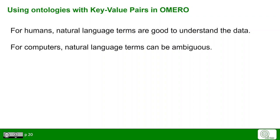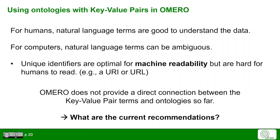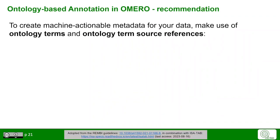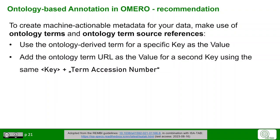In the next subchapter, we will focus on ontologies for key-value pairs. As a preview: for humans, natural language terms are easy to understand because we can grasp context, but for computers, natural language terms can be ambiguous — computers rely on unique identifiers to make data machine readable. However, URIs or URLs are hard for humans to read. In OMERO, there is no specified way to link key-value pairs with ontologies, but our current recommendation is to use key-value pairs for both ontology terms and natural language terms, including the ontology term reference. Use an ontology-derived term as the value for a specific key, then add a second key-value pair with the ontology term URL, using the same key name with the string "term accession number" appended, based on the ISA tab recommendation.